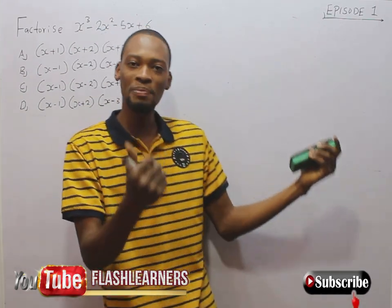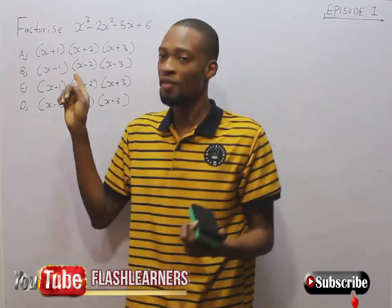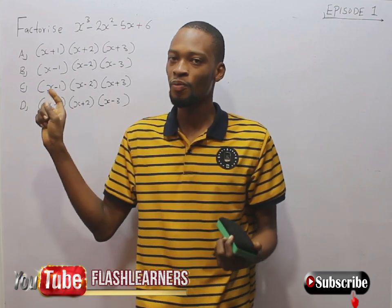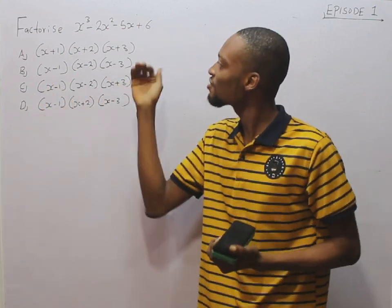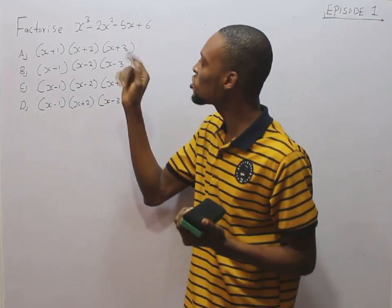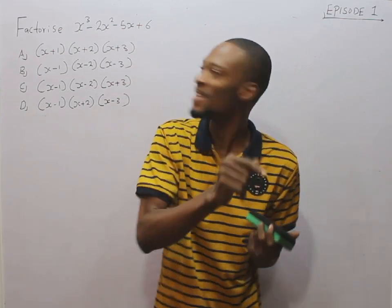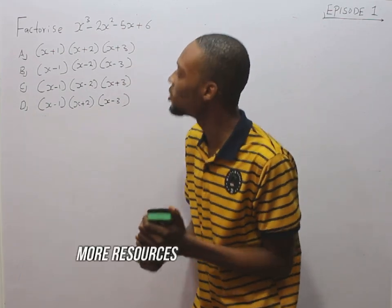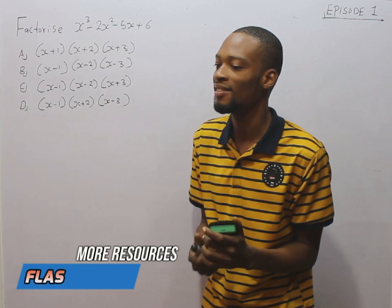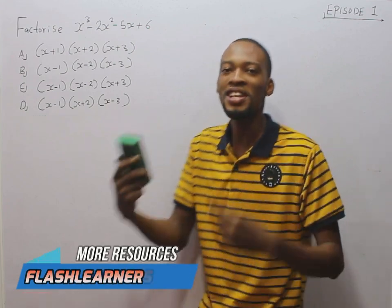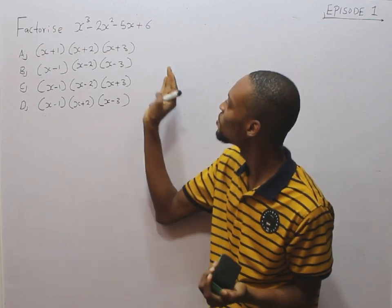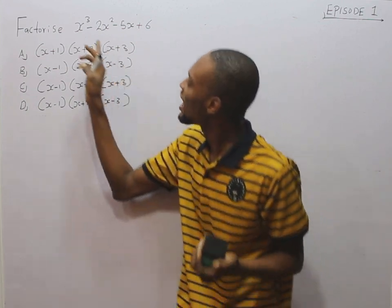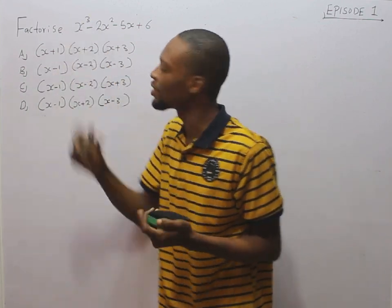In this episode, we shall be taking care of this question, which says: factorize s raised to the power of 3 minus 2s squared minus 5s plus 6. This question is under polynomial, and looking at this polynomial, the highest power of the variable is 3.